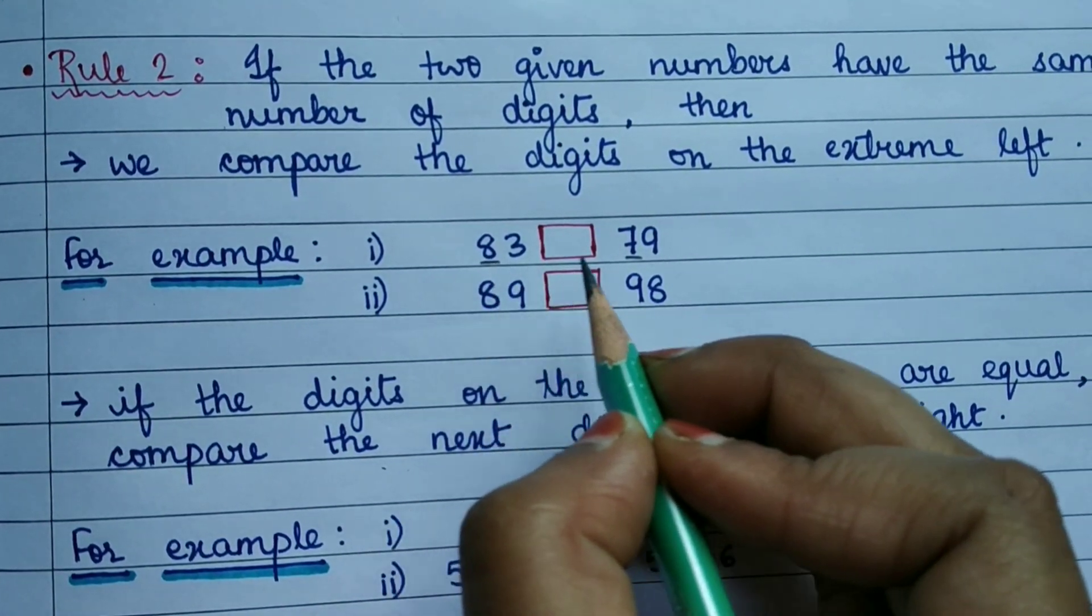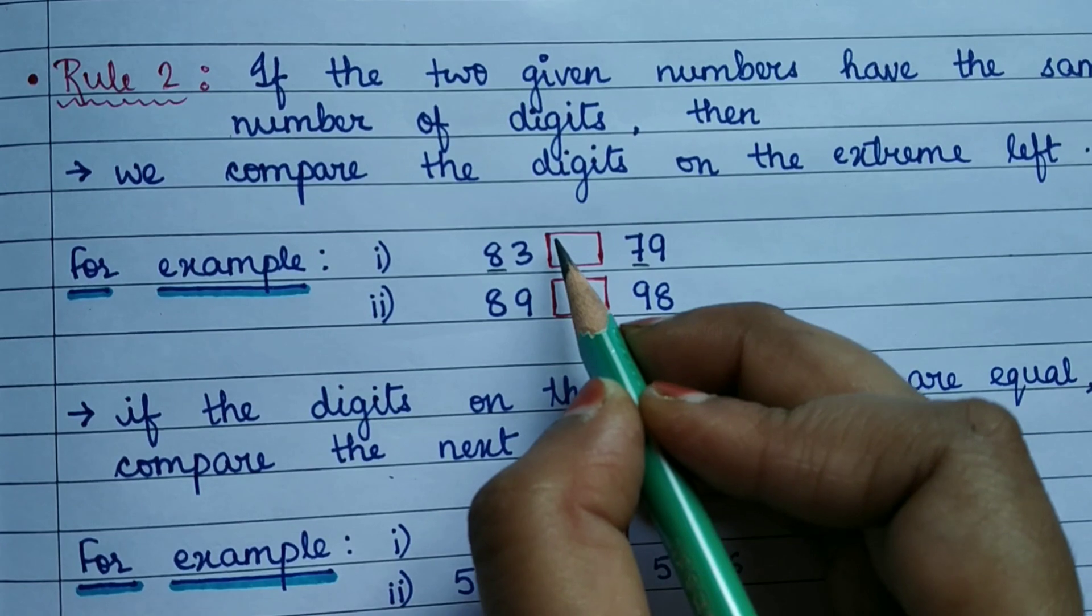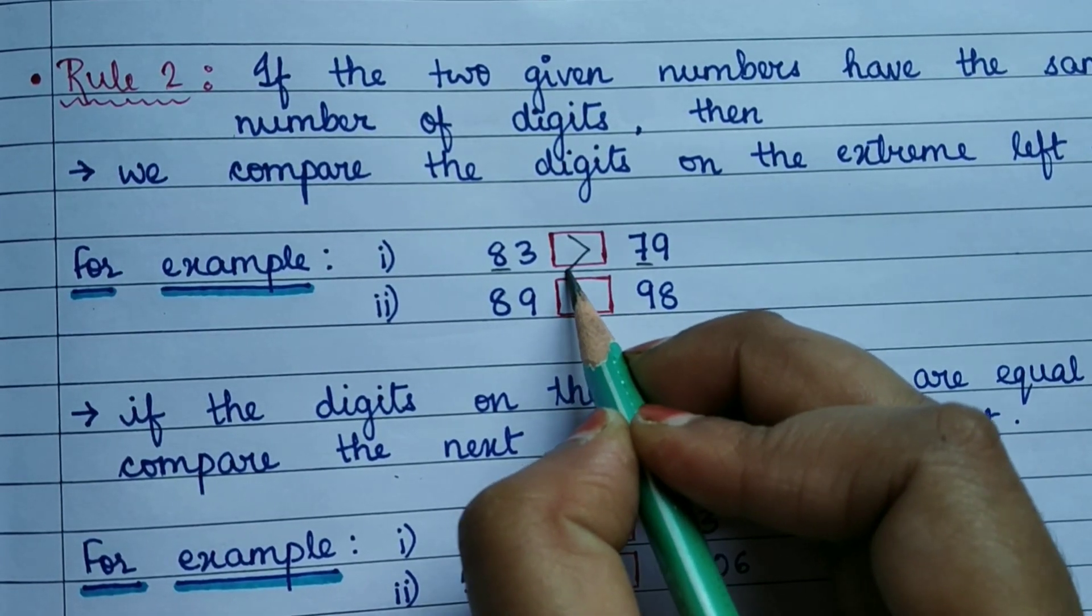So here 8 and 7 will be compared. Since 8 is greater, the number 83 will be greater than 79.